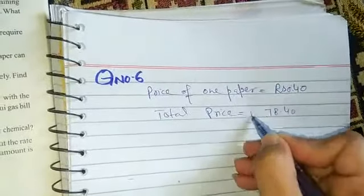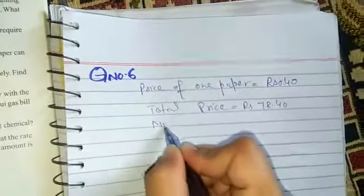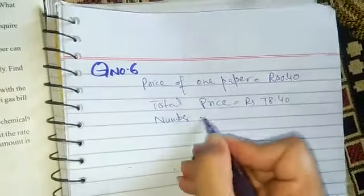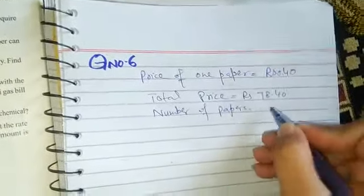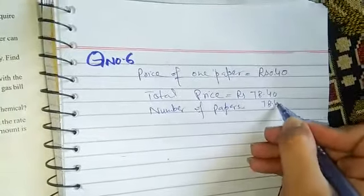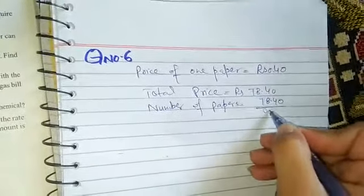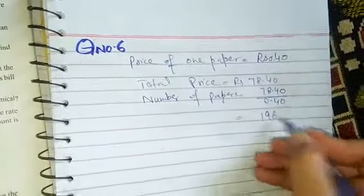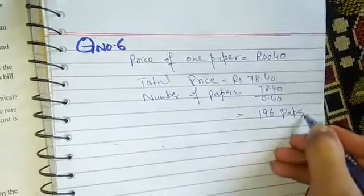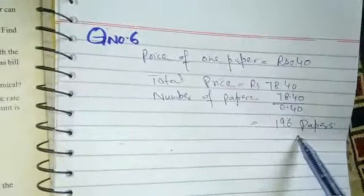And we have the total price, total price is equal to 78.40. We have to find the number of papers. So number of papers is equal to large price divided by small price. After division, the answer becomes 196 papers. These are the number of papers.